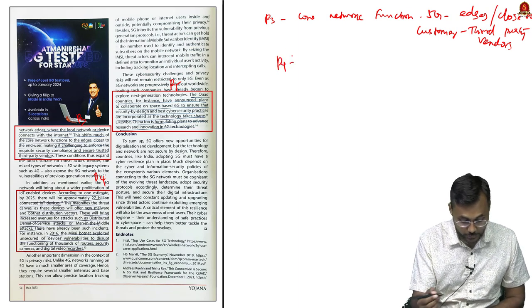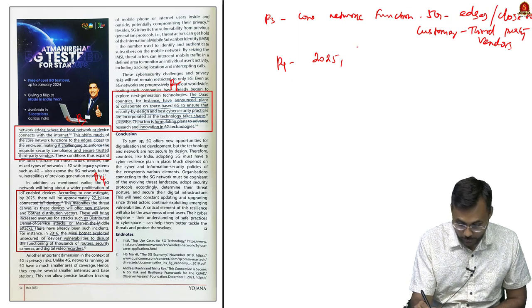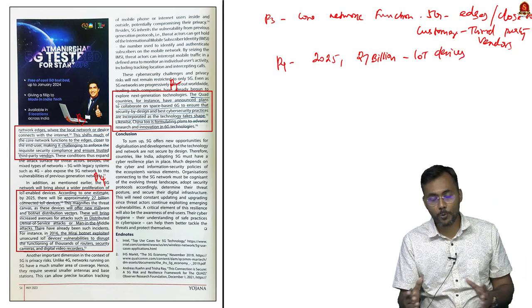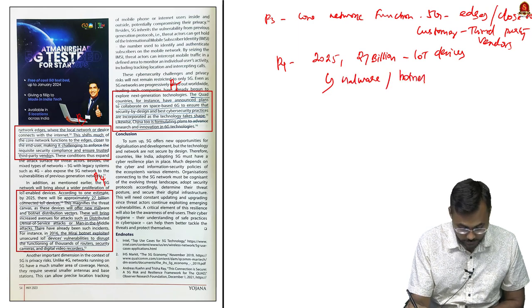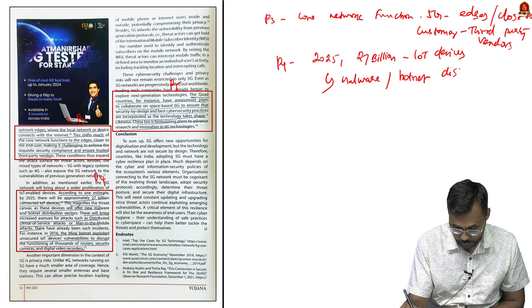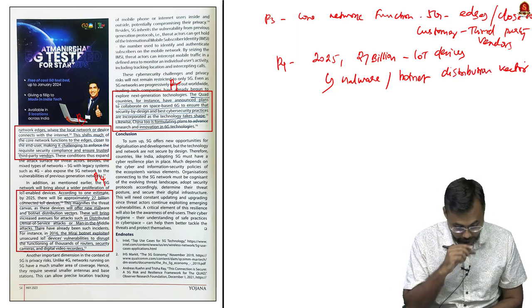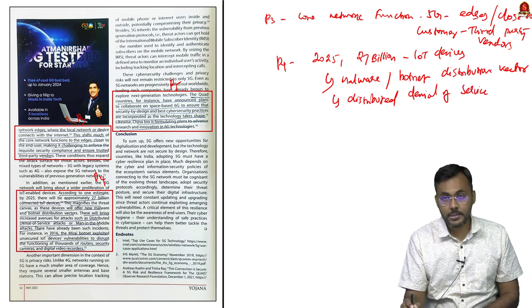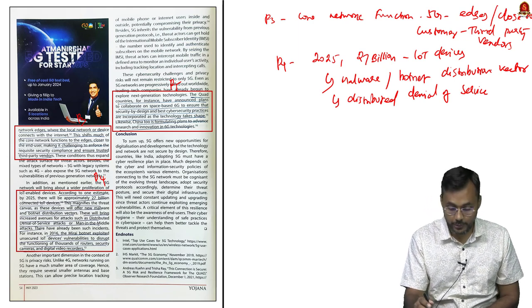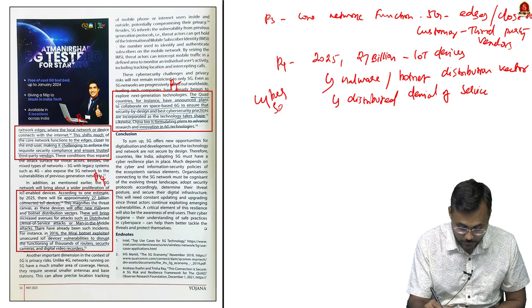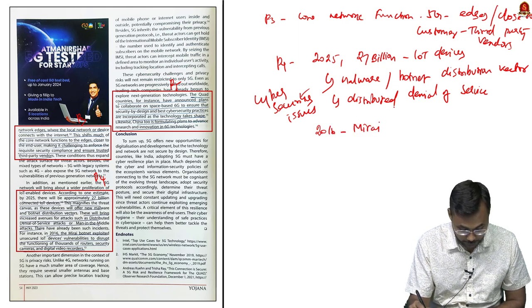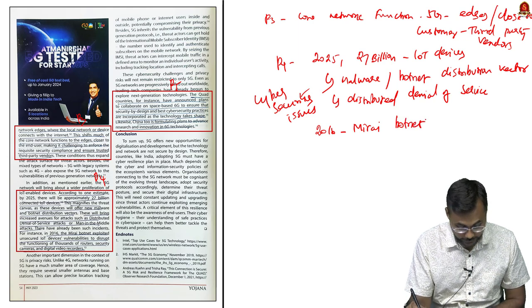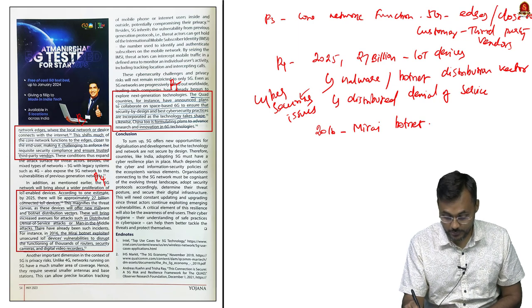Paragraph 4 shows the scale of the challenge: by 2025 around 27 billion IoT devices will exist globally, showing how interconnected countries are. This creates potential for malware, botnet distribution vectors, and distributed denial of service attacks. An example given is the 2016 Mirai botnet which exploited unsecured IoT devices.